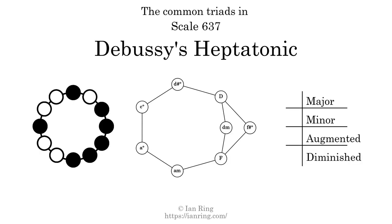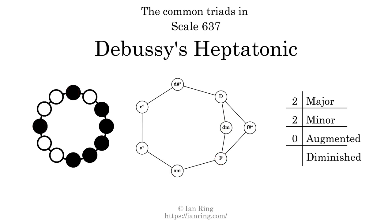Here are the common triads present in this scale. The diagram in the center is a graph of parsimonious voice leading between triads. There are 2 major triads and 2 minor triads.